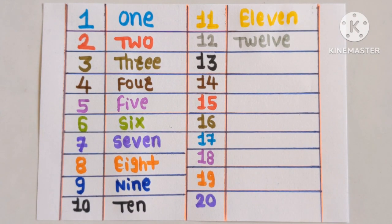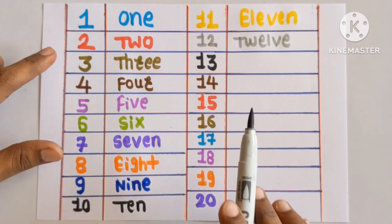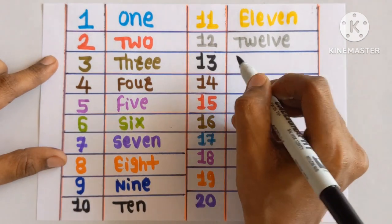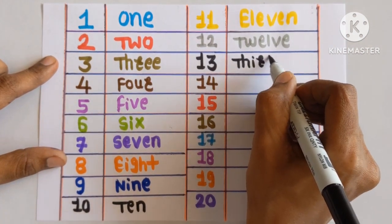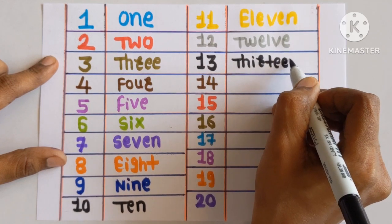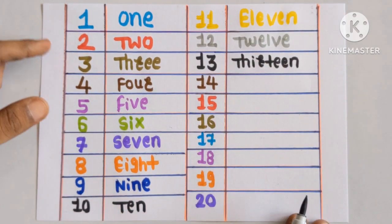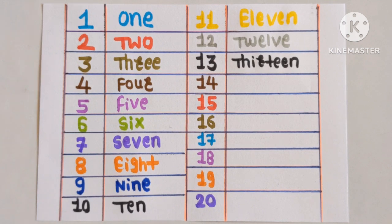Next number is 13: T-H-I-R-T-E-E-N. Thirteen. Black color.